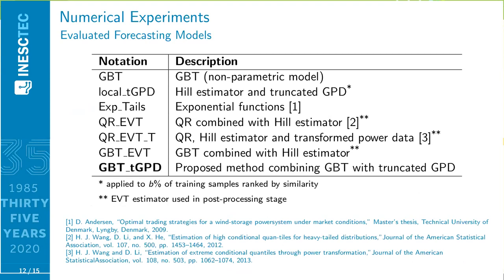In terms of benchmarks, we have two naive models, the GBT model directly applied to predict extreme quantiles and the truncated GPD directly applied to the data. Then, we have the exponential tails, the first non-parametric method that I presented, and the methods using extreme value theory as a post-processing stage.